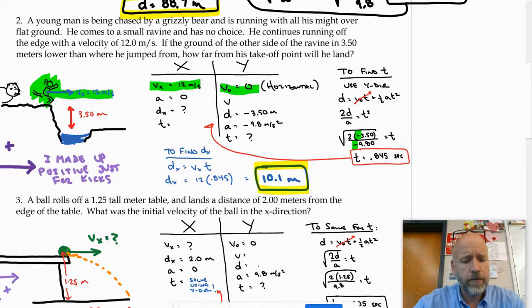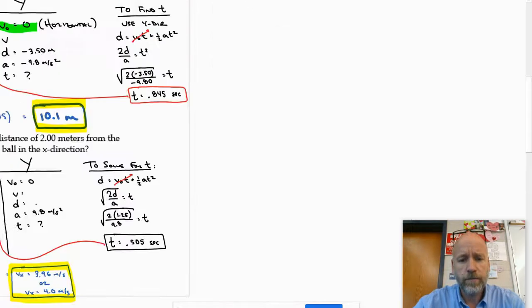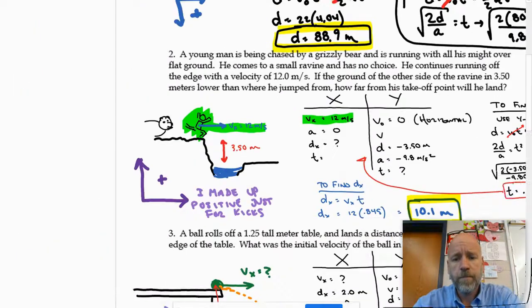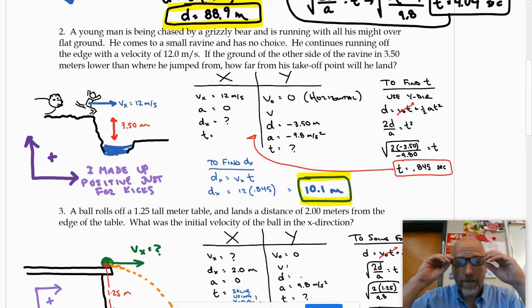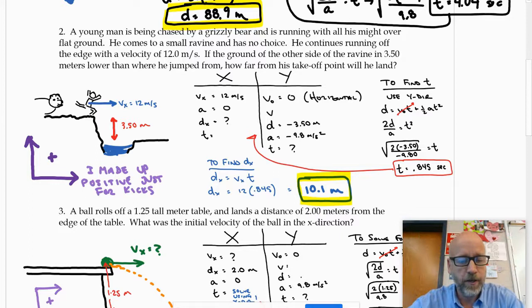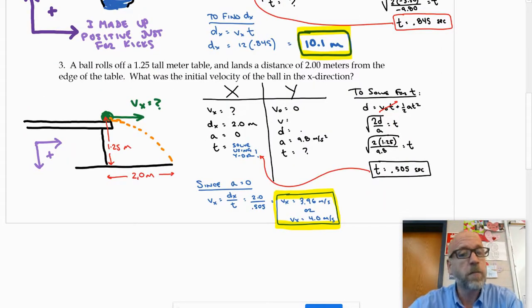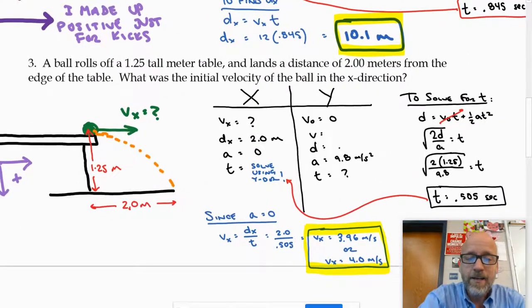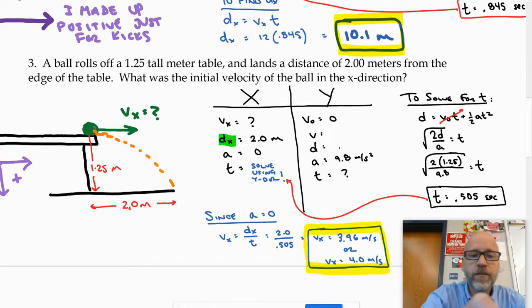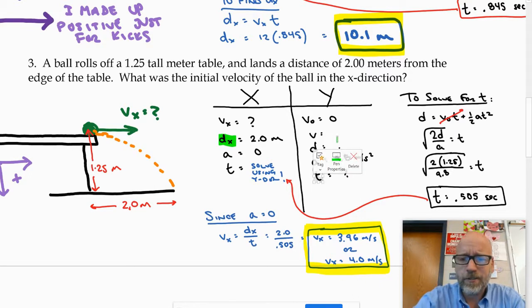Next one: there's a problem very similar to the ramp lab that we've conducted for years here, and hopefully we'll get to do that at some point this year. In this one, it did not give you the velocity, but instead gave you the distance in the x and the distance in the y—which actually that should say 1.25; I'm not sure why it's not written down.